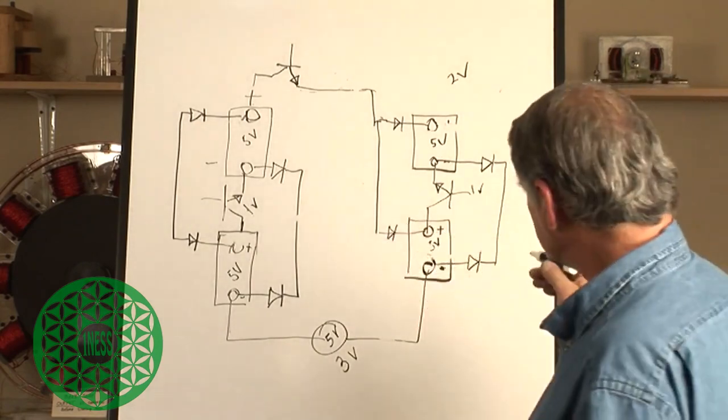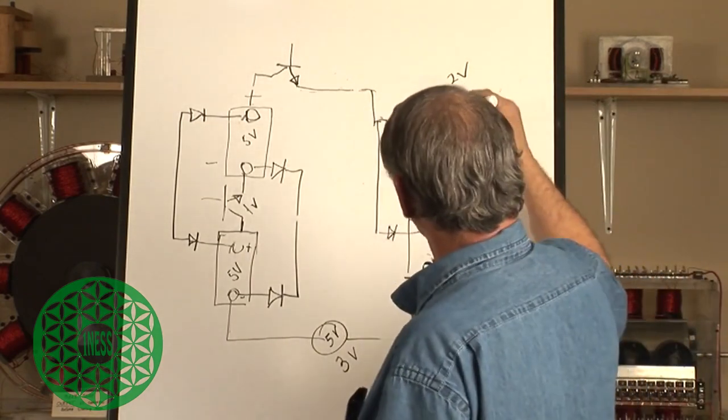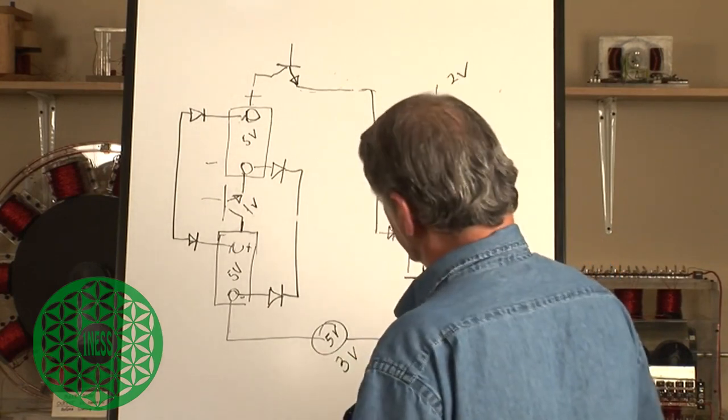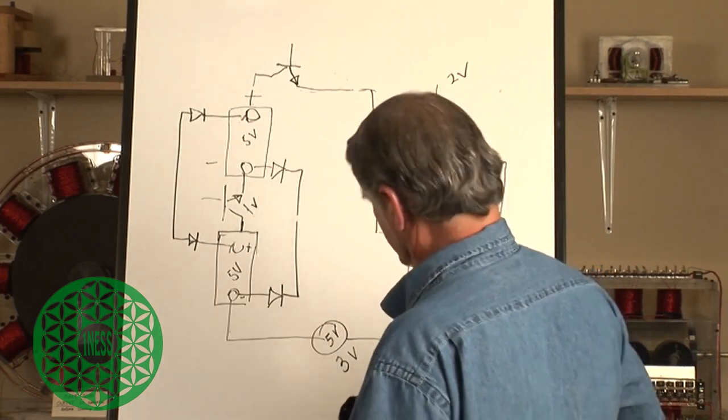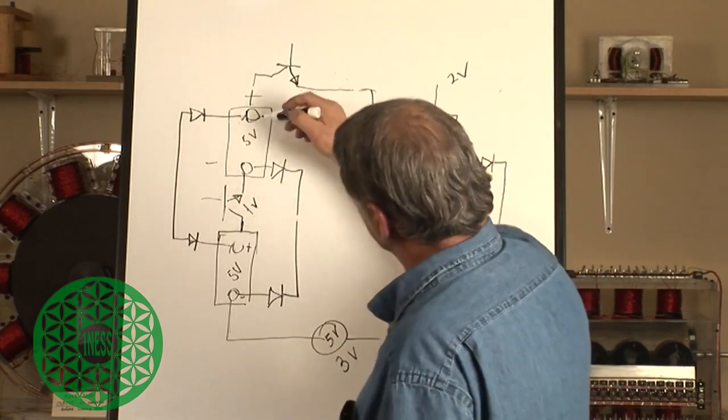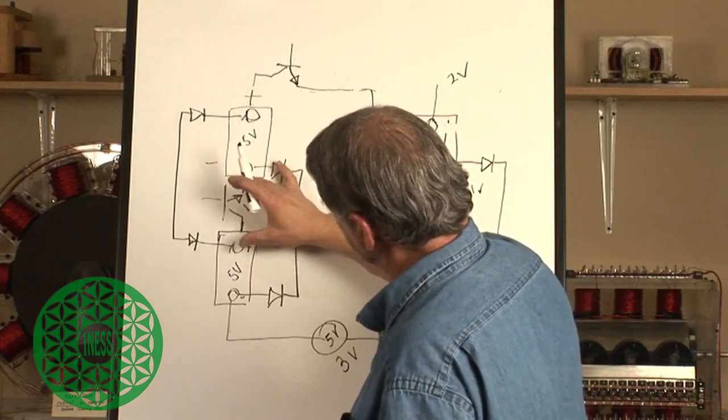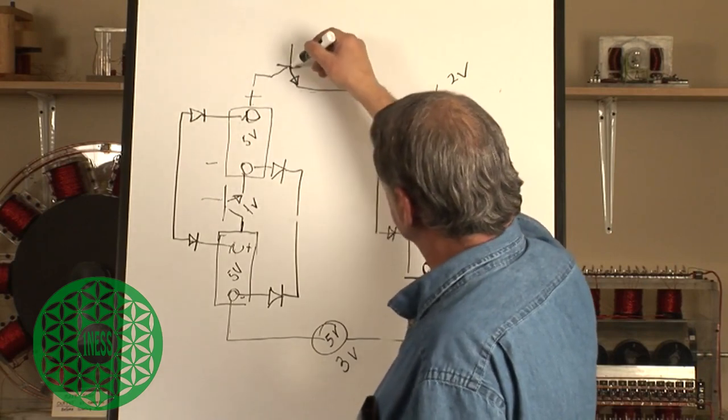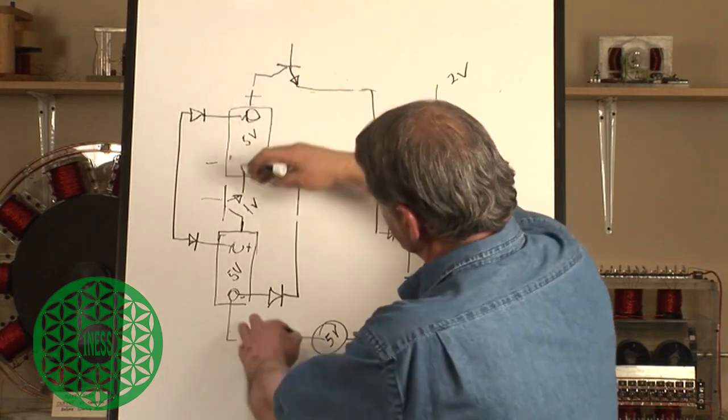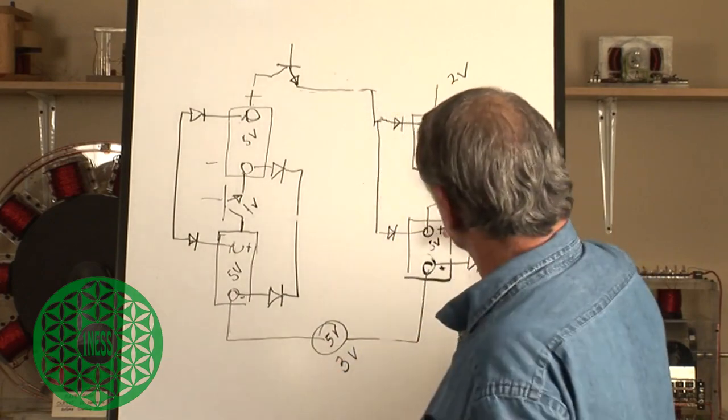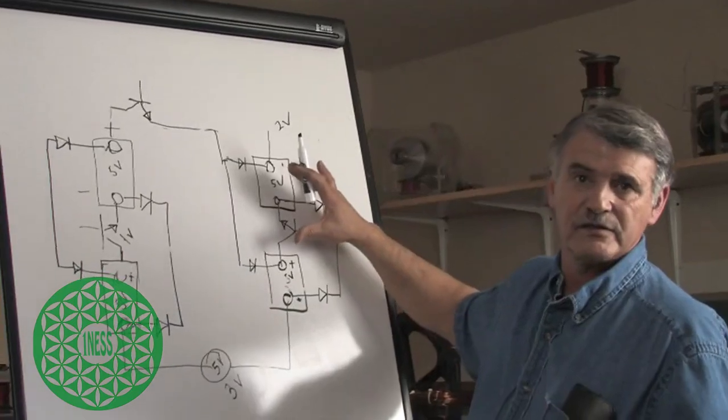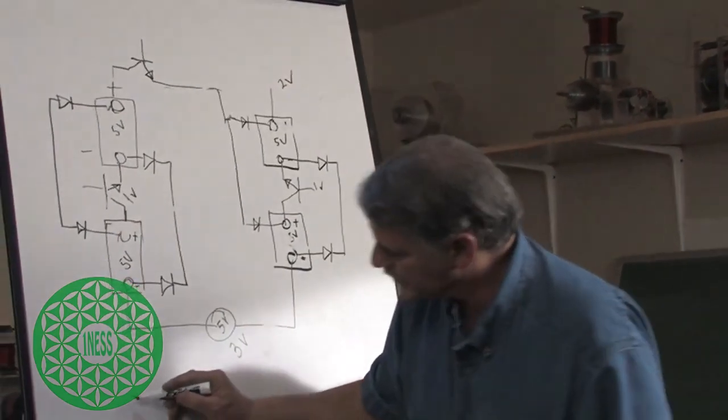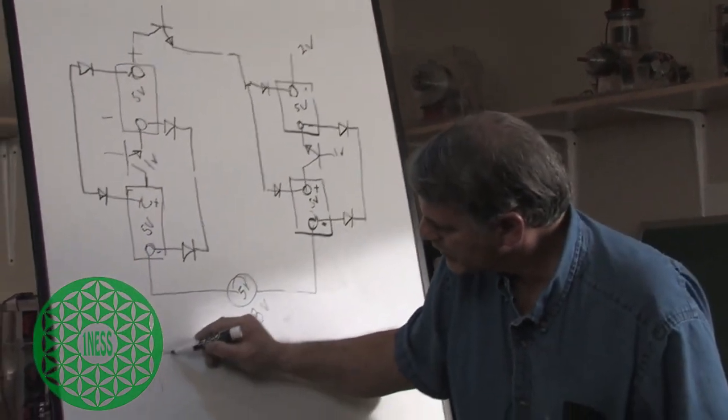Now if I did the same thing on this side, let's start over right here so we can get this clearly. If you notice, when this side turns on, that means this transistor turns on here, this transistor turns on here. So all of a sudden there's 10 volts that's going to want to appear across this five volts.